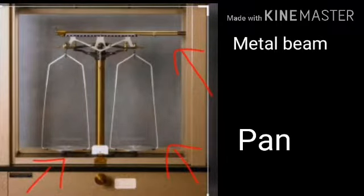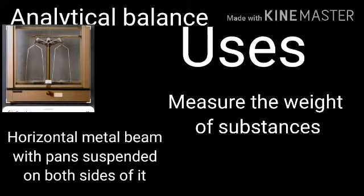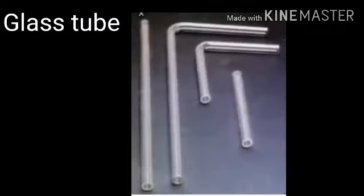Analytical balance. It is a horizontal metal beam with pans suspended on both sides of it. Analytical balance is used to measure the weight of substances — that is, chemicals.